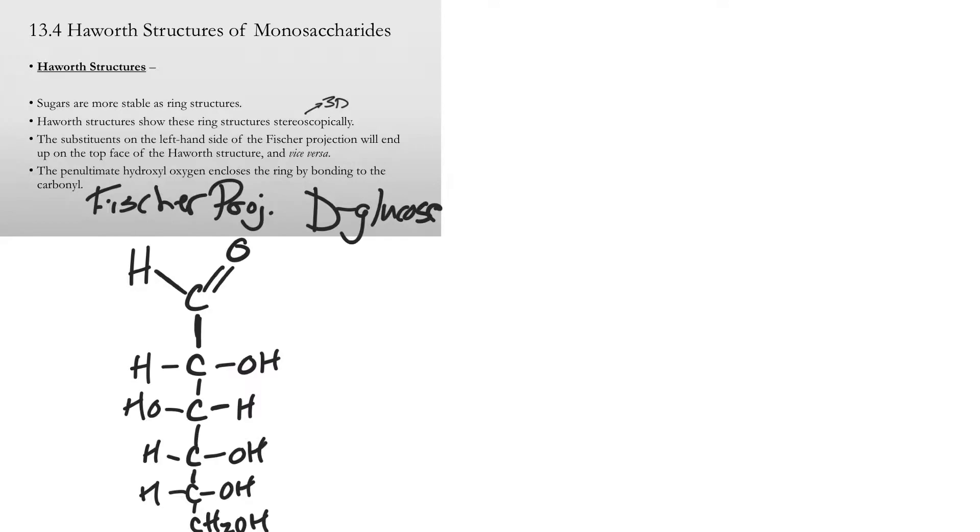Now what I'm going to do is use some color coding in order to kind of show this. Your book uses numbering. I like color coding. Let's keep the aldehyde group black. But the next group is going to be full of red, to show you where they end up, followed by blue, green, pink, and purple.